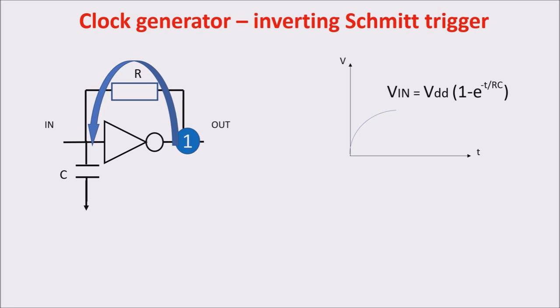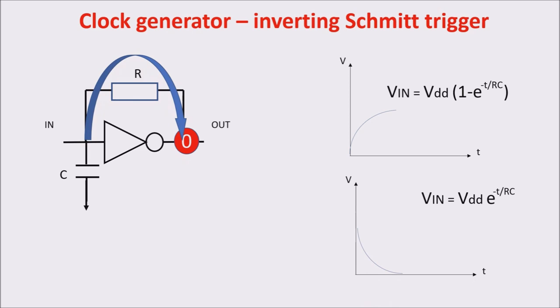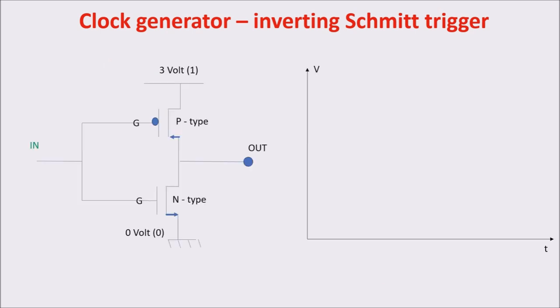At some point, the input voltage reaches the threshold voltage of the N-type transistor, switching it ON and changing the output to zero. So, the capacitor starts to discharge itself through the resistor and the N-type transistor to the ground, following an exponential law as well.